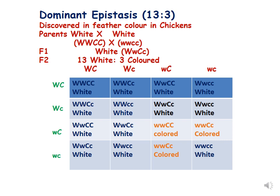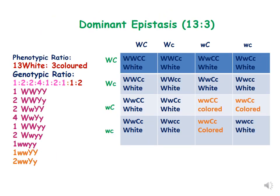This is an example of dominant epistasis because the dominant allele capital W is suppressing the other dominant non-allelic gene capital C. Capital W is epistatic and capital C is hypostatic. The phenotypic ratio is 13 white to 3 colored. When we split the 13 white, the genotypic ratio is 1:2:2:4:1:2:1, and the 3 colored will be in a 1:2 ratio. We have now covered both examples of dominant epistasis — the 12:3:1 and 13:3 ratios.